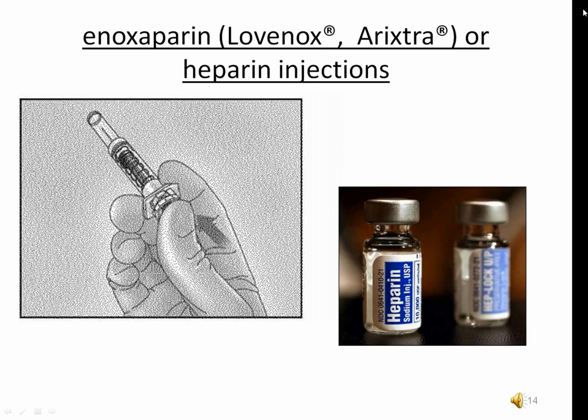Enoxaparin, or Lovenox, is a prepackaged syringe — do not expel the air prior to injection. After completing the injection, which includes injecting the bubble, a sharp safety shield is activated by pressing the plunger until it clicks into place. Patients may be trained to inject this drug into themselves after discharge or even in the hospital. It must be injected into the abdomen and sites need to be alternated. Alternatives to enoxaparin or heparin injections include oral aspirin, usually enteric coated.